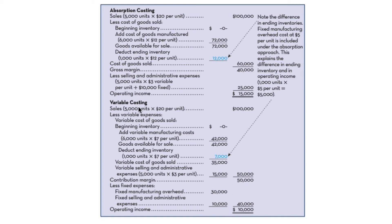Now let's look at what's new under variable costing. Sales are the same: $100,000. Less variable expenses — no beginning inventory — but here we only add variable manufacturing costs: 6,000 units at $7 per unit for $42,000 of goods available for sale. Ending inventory is 1,000 units at only $7, so our cost of goods sold is $35,000. Up under absorption costing, cost of goods sold was $60,000 — so there's a difference of $5,000.